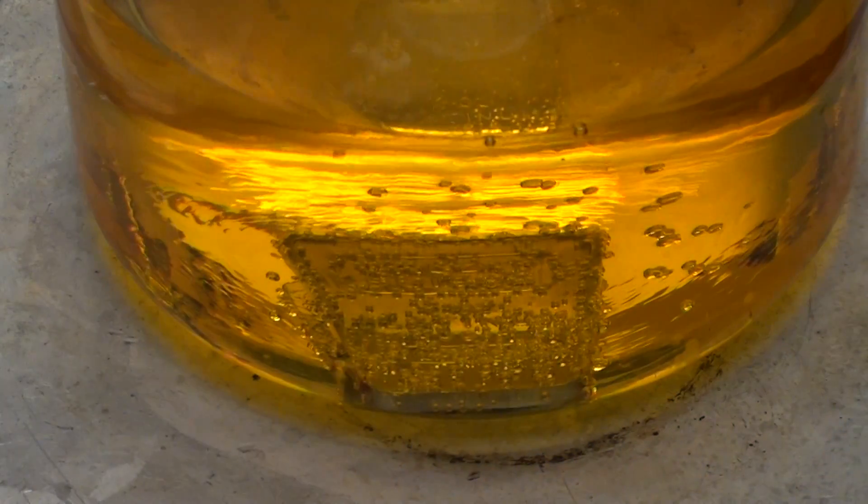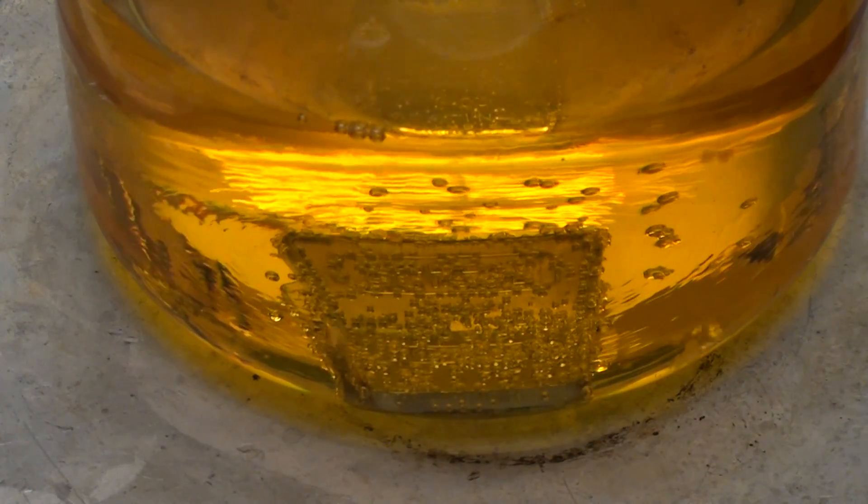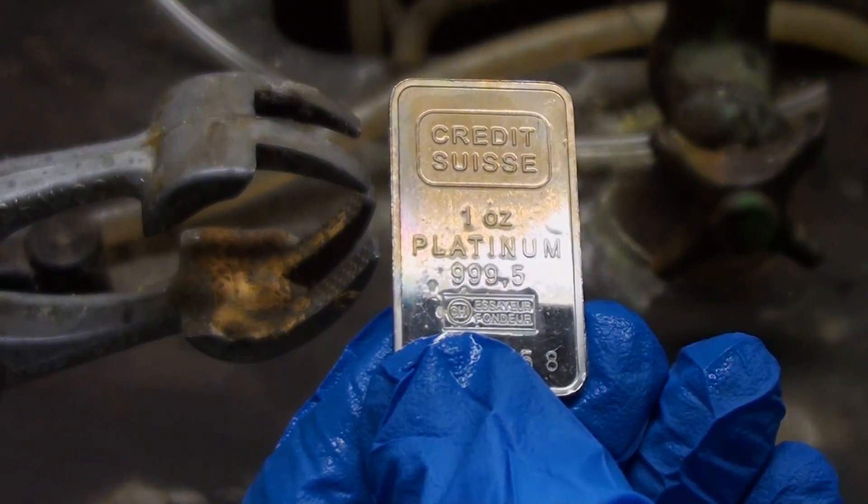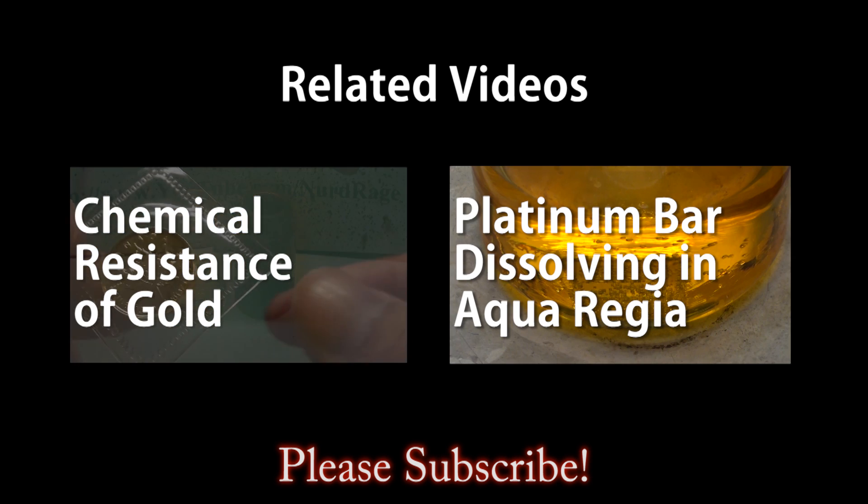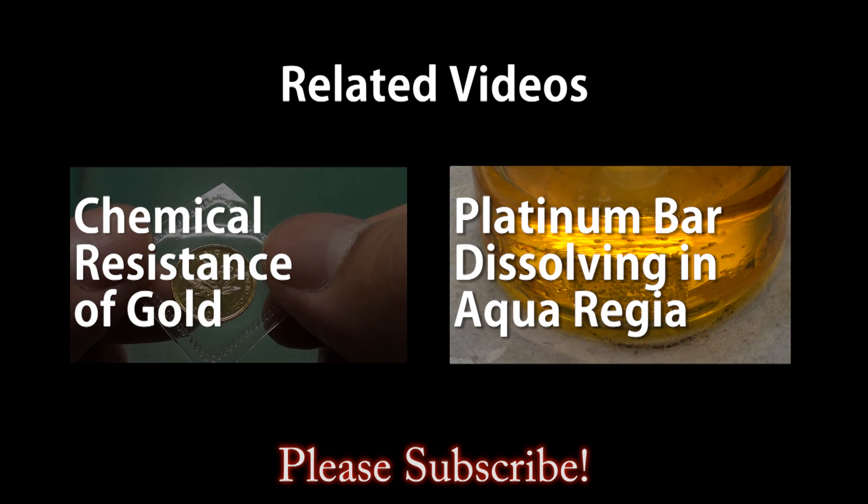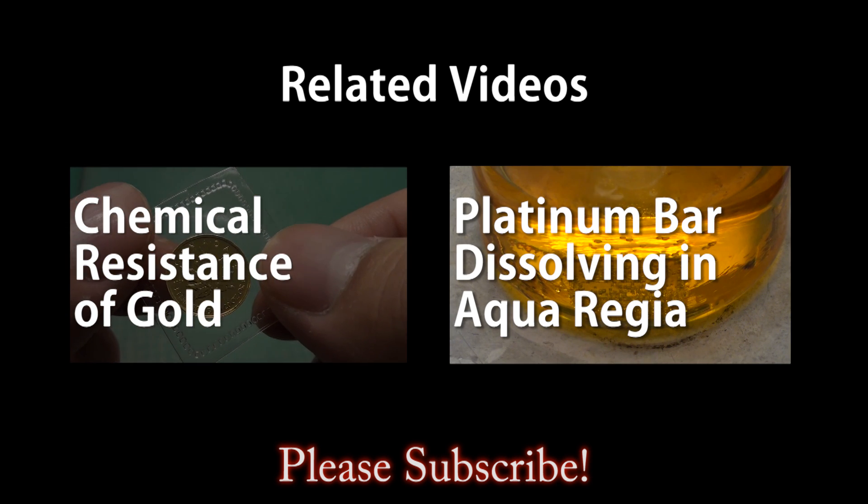For those interested, of course I'll be dissolving this in aqua regia in a later video. In this video we'll look at the chemical resistance of gold. In this video we're going to dissolve platinum in a combination of nitric and hydrochloric acids, better known as aqua regia.